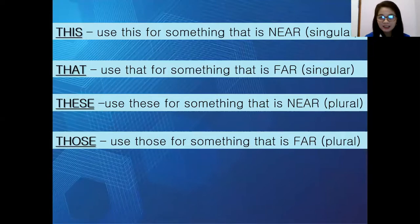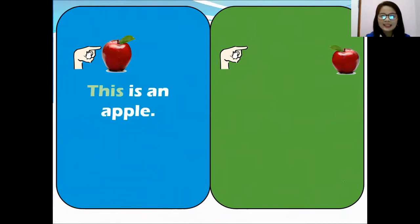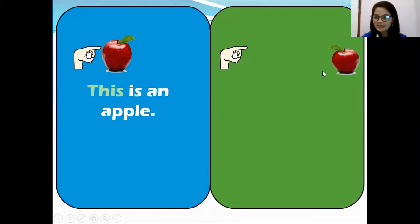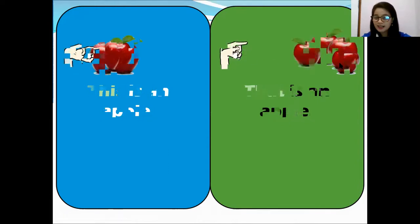If you say singular — one. If you say plural — more than two, many. For example, what is this? Is it 'this,' 'that,' 'these,' or 'those'? This is an apple — 'this,' very near and only one. How about this one? That is an apple, because it is far from you. This is an apple — very near. That is an apple — far.